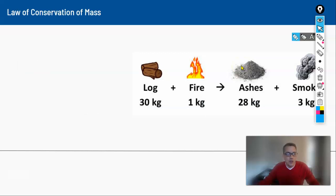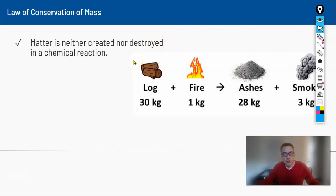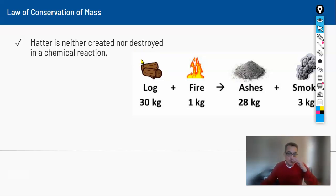We start with the law of conservation of mass. This is one of the fundamental ideas in science, and particularly in chemistry. It simply says that whatever you start with, you have to have at the end — matter is neither created nor destroyed in a chemical reaction. In the illustration on the screen, everything we start with is accounted for at the end.